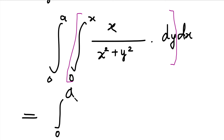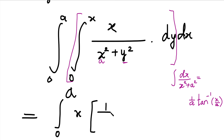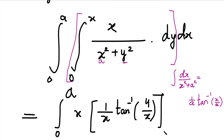So the integral becomes: integral from 0 to a of x times the integral of 1/(x² + y²) dy. Since x is constant it goes outside. Using the formula ∫ dy/(x² + y²) = (1/x) tan⁻¹(y/x), where x plays the role of 'a' in the standard formula ∫ dx/(x²+a²) = (1/a) tan⁻¹(x/a). So the result of the inner integral is (1/x) tan⁻¹(y/x), evaluated from y = 0 to y = x.